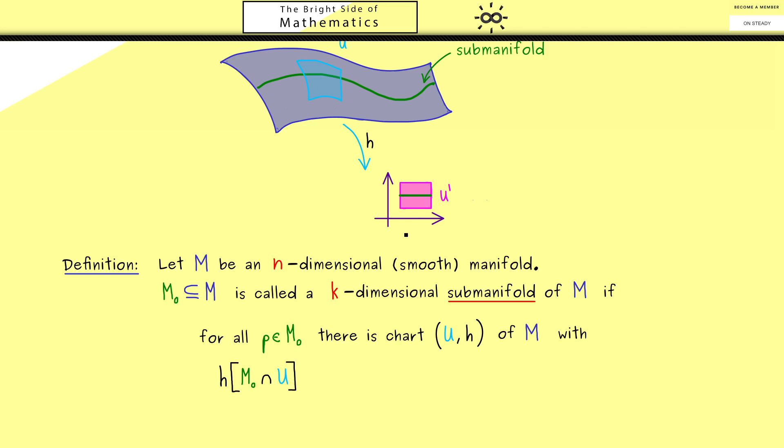So this set we find here, and the image is there. Okay, and now this image should look similar to R to the power k. So this would be our k-dimensional space we see here. However, this one needs to lie in the bigger space R^n.